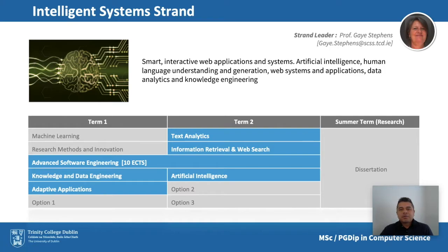The intelligent systems strand focuses on smart, interactive web applications and systems that are becoming integral in our daily lives — at work, at home, and in social interactions such as social media applications. Designing and building such systems requires expertise in areas such as artificial intelligence, human language understanding, human language generation, web systems and applications, data analytics, and knowledge engineering. This strand is closely related to the research and themes of the National Research Center ADAPT, the Center for Digital Content Technology.